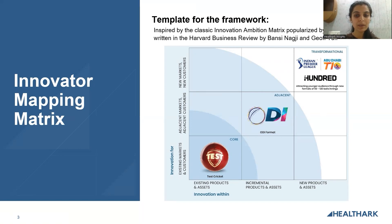For example, 30% for core, 40% for adjacent, and 30% for transformational — depending entirely on the risk appetite of the user.